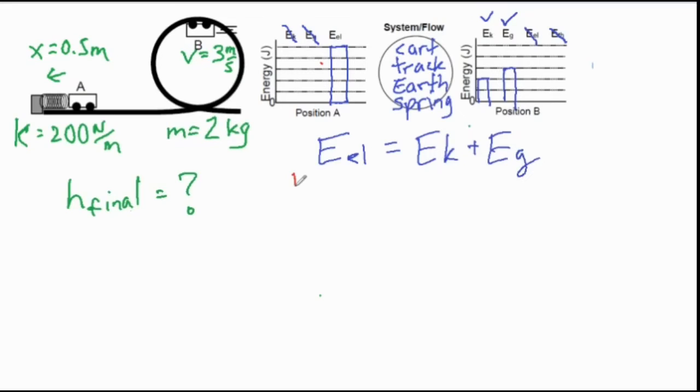So now we have three different formulas. We have one half kx squared for elastic potential energy. We have one half mv squared for the kinetic energy. And then we have mgh for the gravitational potential energy. So let's go ahead and see what we have here.